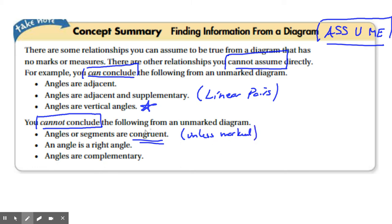Number two, you cannot assume that an angle is a right angle. For it to be right angle, you better have that box. It better say that box. And number three, angles are complementary. Again, I don't really care. It's all about the right angle.